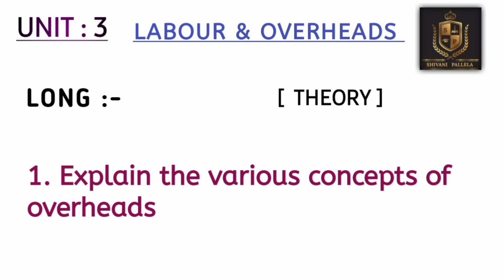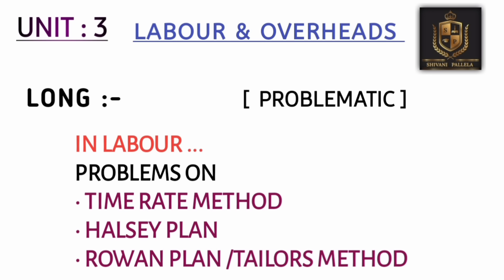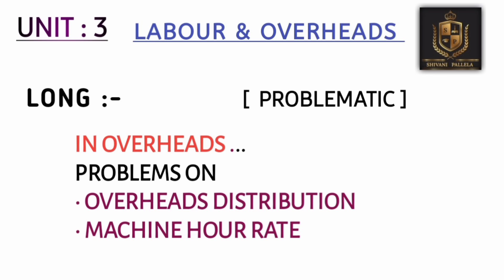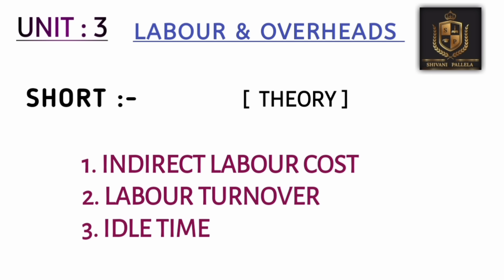Coming to unit three — Labor and Overheads — we can't expect much theory from this unit, but one important topic is the concepts of overheads. If you are perfect with the problematic, you can answer that theory question easily. In the labor chapter, the problematic-based questions cover Time Rate Method, Halsey Method, and Rowan Plan Method. In overheads, there are only two methods: Overhead Distribution and Machine Hour Rate. In Part B, unit three has two questions and you need to attempt only one — either labor or overheads.